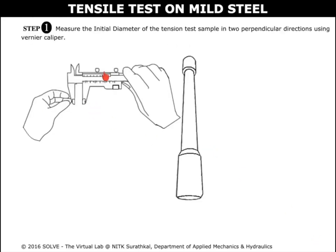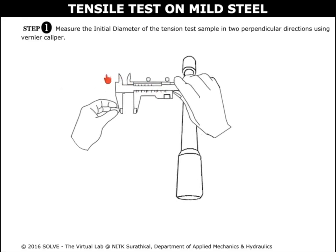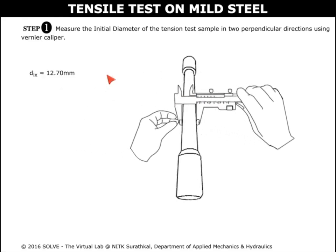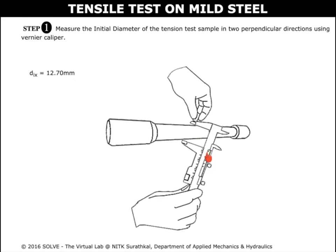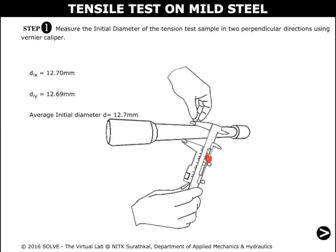Click on the vernier caliper screen to measure the diameter of the specimen. The diameter is measured in two perpendicular directions. This is the second direction and the average initial diameter is then calculated.